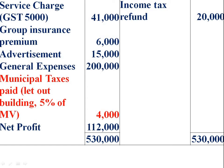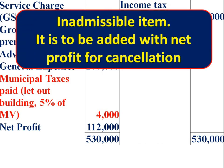Municipal tax paid for the let-out building — it relates to income from house property and not to business expenditure. Therefore, it is an inadmissible expense and it is to be added back.